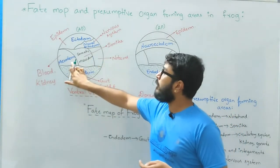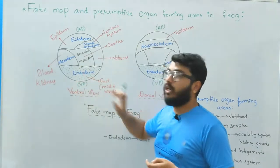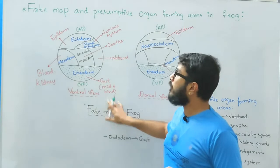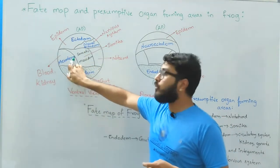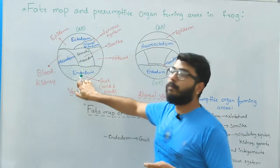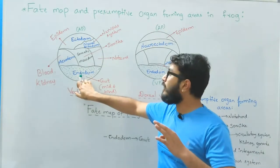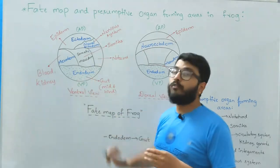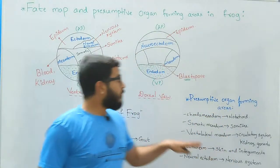They are the ectoderm, mesoderm, and the endoderm. This is the ventral view of the fate map of the frog which shows ectoderm, differentiated mesoderm, and differentiated endoderm which is darkly stained or darker due to excess of yolk deposition.